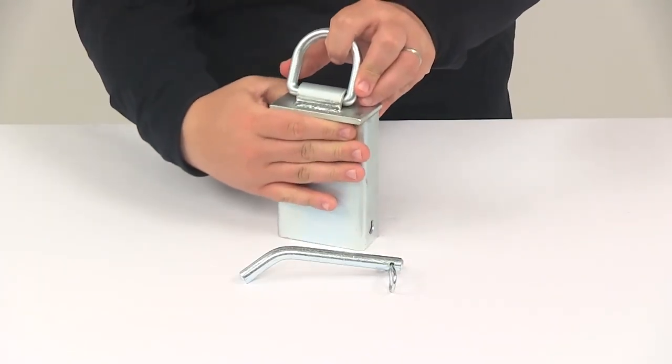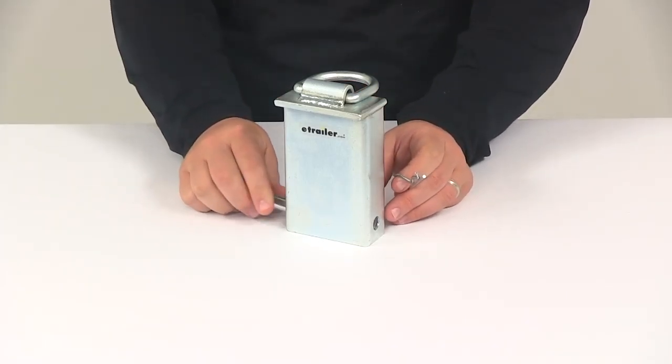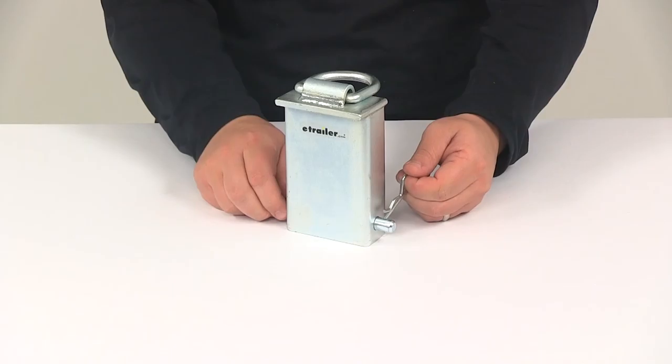So all you have to do is place this through the attachment point, the stake pocket hole, line up your pinholes, and then secure it in place with the included pin and clip.